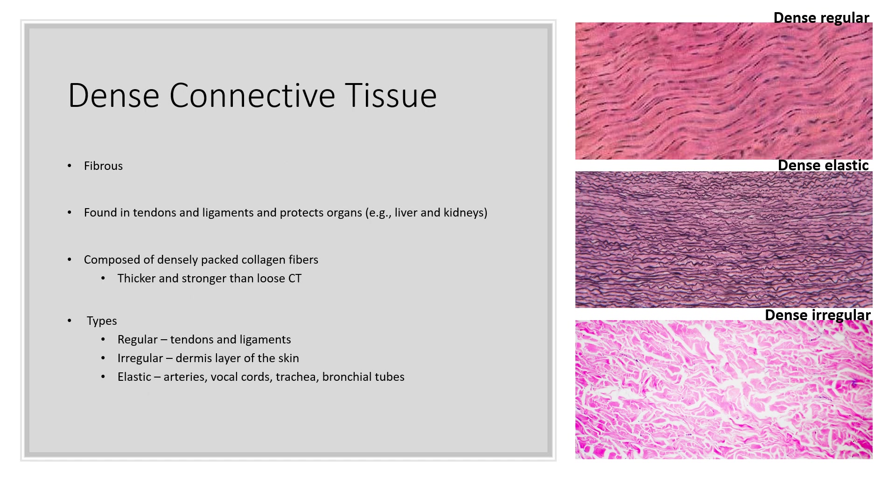Dense connective tissue is very fibrous. You can find this in tendons and ligaments, and it also protects organs such as the liver and kidneys. It's composed of very densely packed collagen fibers, making it much thicker and stronger than loose connective tissue. There are three types: regular, found in tendons and ligaments; irregular, found in the dermis of the skin; and dense elastic connective tissue, found in the arteries, vocal cords, trachea, and bronchial tubes.